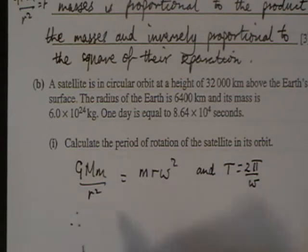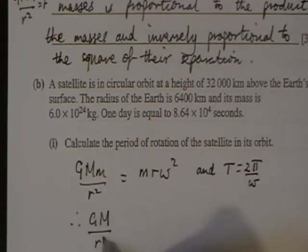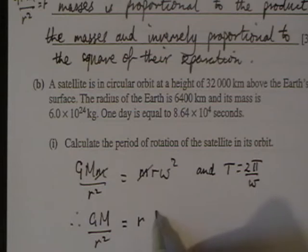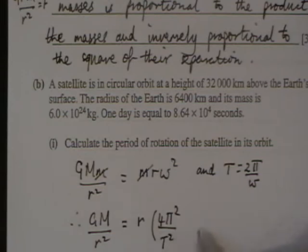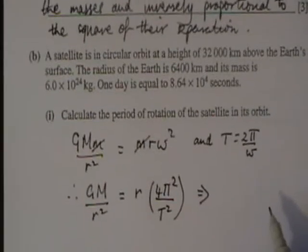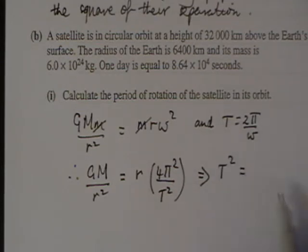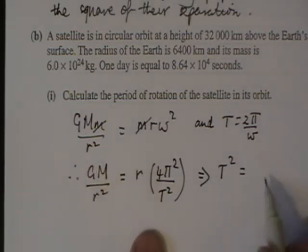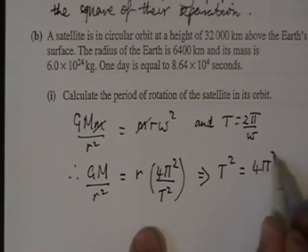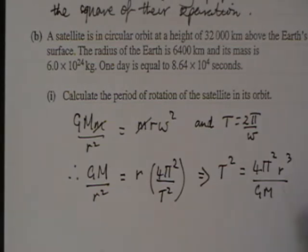Therefore, what we know now is that GM over R squared - because the m's cancel - equals R times 4π² over T². Which means that T squared is equal to 4π²R³ over GM.